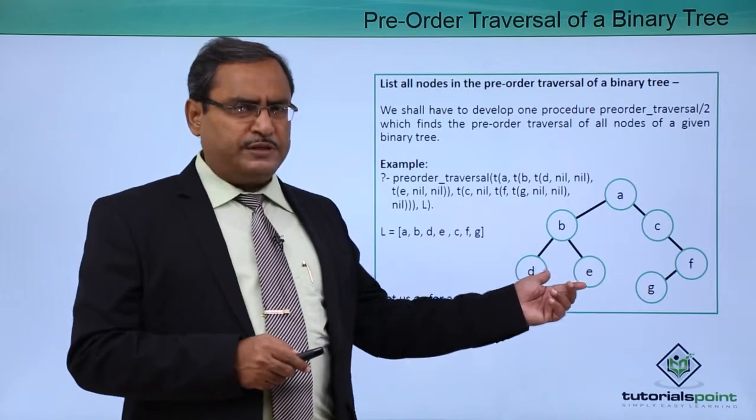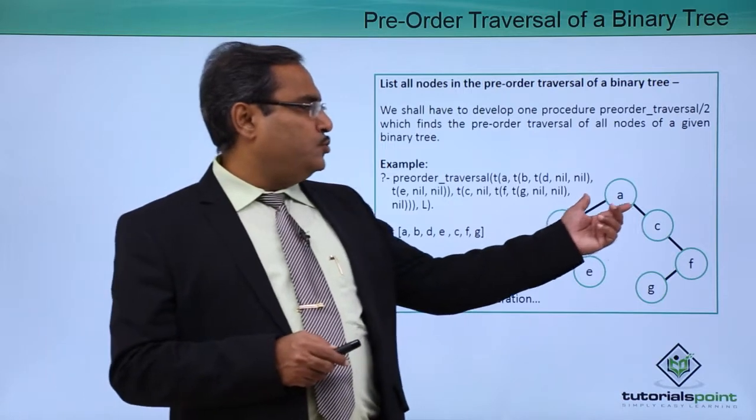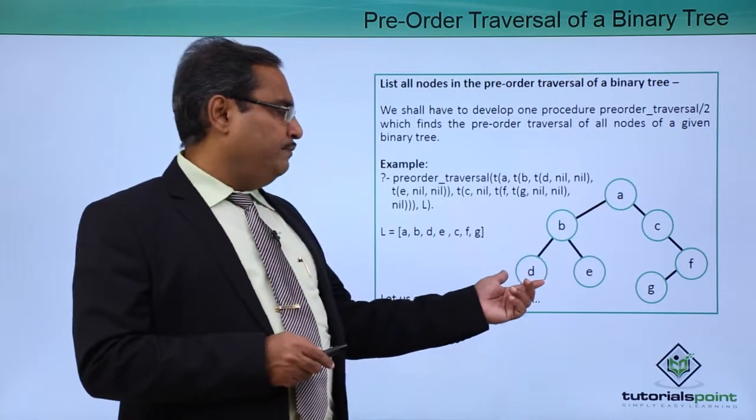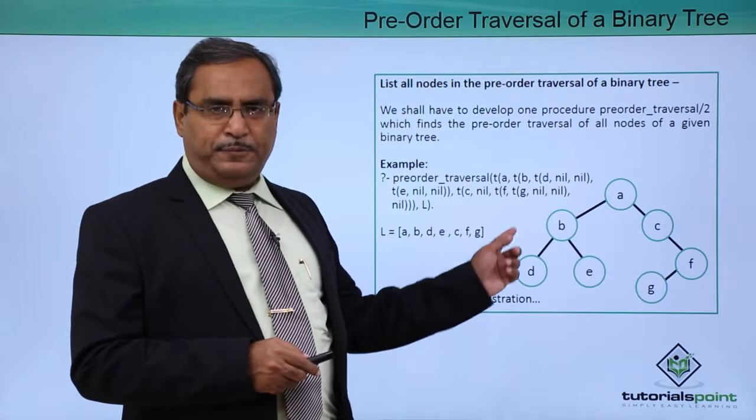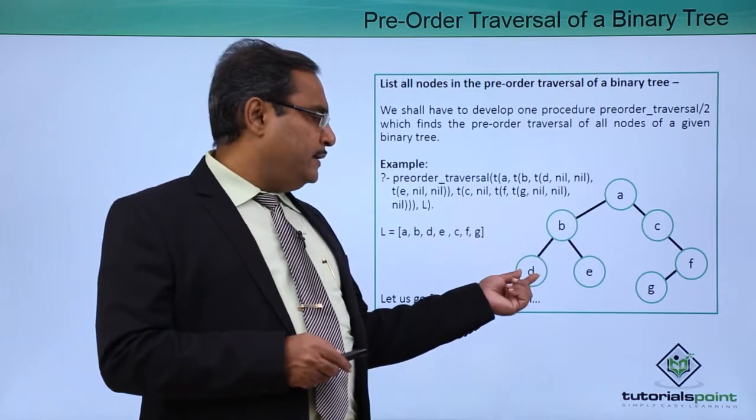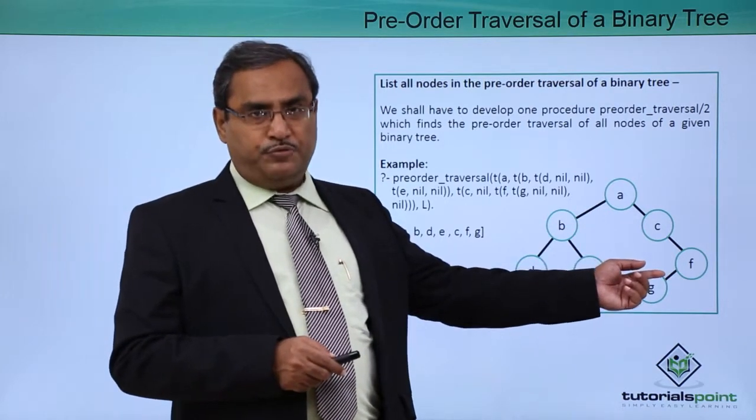If you go for the traversal manually on this binary tree, at first the root will come. So A will be coming as the first term, and then we should be traversing this left. But here this left will have this root. So A, B, D, E.